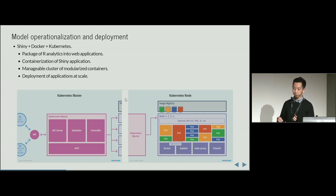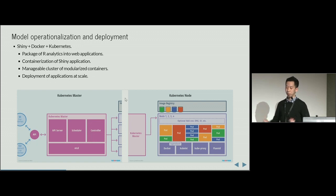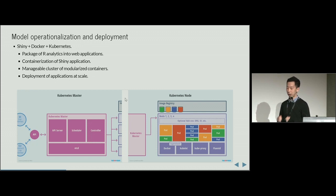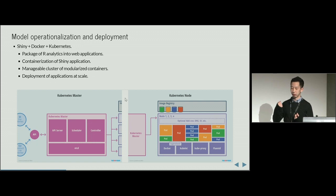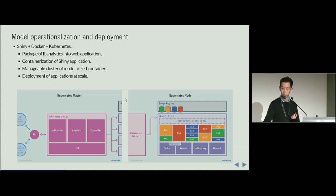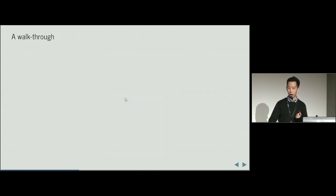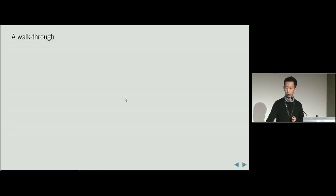A lot of times we may have to put Shiny onto either a server or wherever so that more people can benefit from it. Docker is a very good choice because you can modularize your Shiny application within the environment and expose the service using the Docker container. Kubernetes goes one step further because it can orchestrate a cluster of containers so that you can even scale up your Docker containers and Shiny applications. I will go through the steps of how you can develop a Shiny application for data analytics and then deploy it onto Kubernetes clusters.